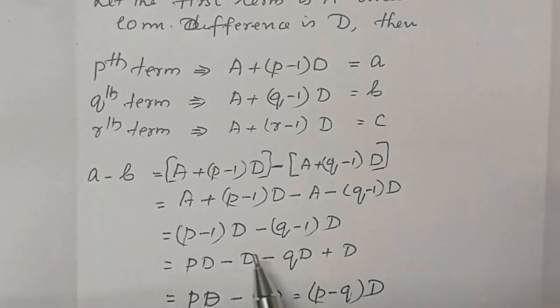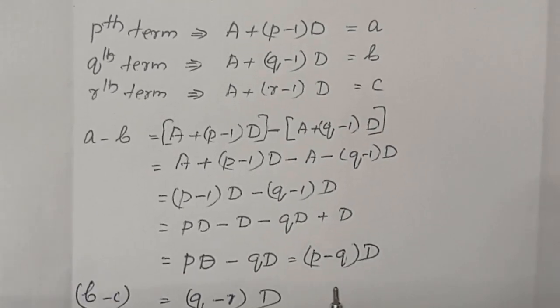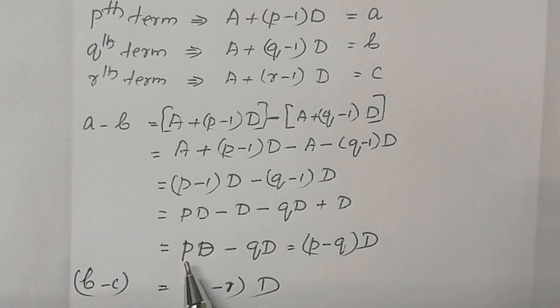The remaining is P minus 1 and minus Q minus 1 into D. Here also negative sign. Removing the brackets, P into D minus D minus QD minus into minus plus D. Cancelling the like terms. Then we will get PD minus QD taking D outside. That means P minus Q into D.